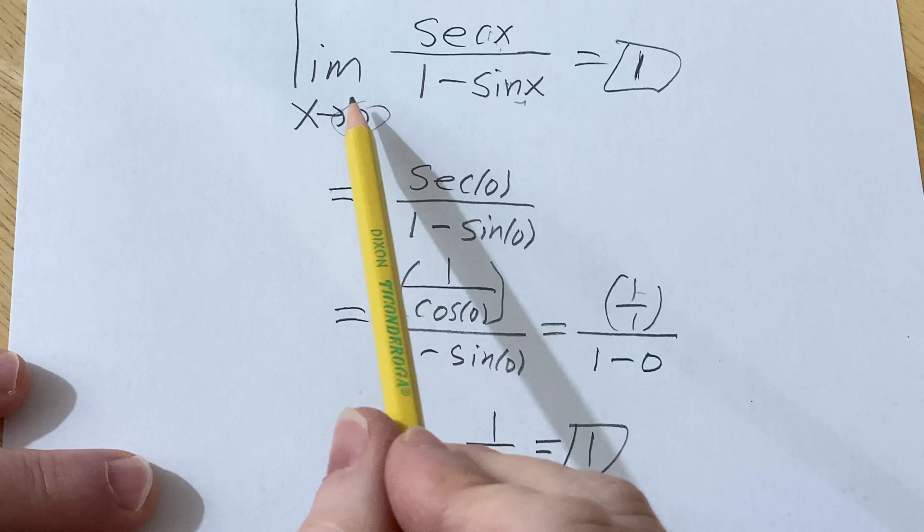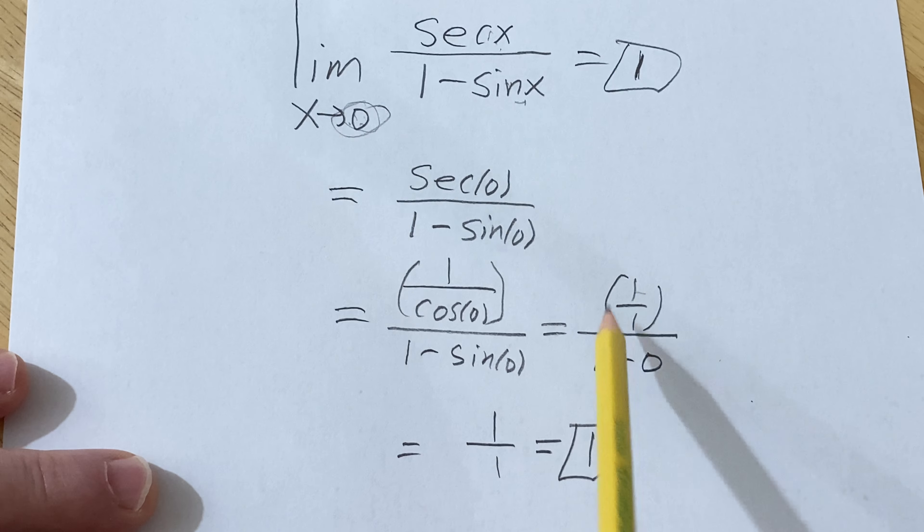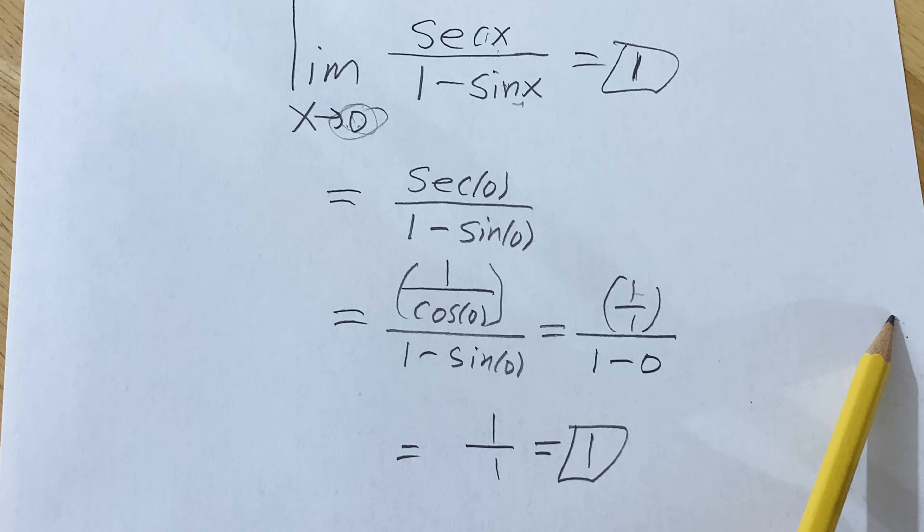We took the zero, we plugged it in, and we got an answer. And whenever you're finding limits, this should always be your first attempt, even if it's just a mental attempt and you do it in your head, it's always worth trying because every once in a while it will work. And this is an example of where it works.